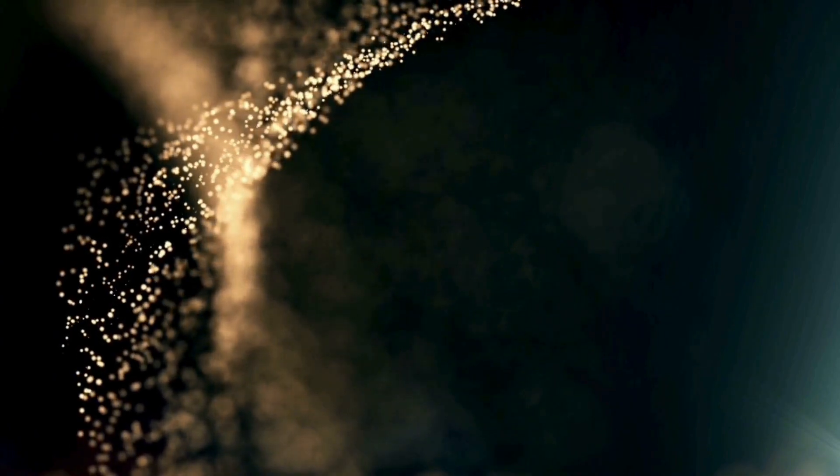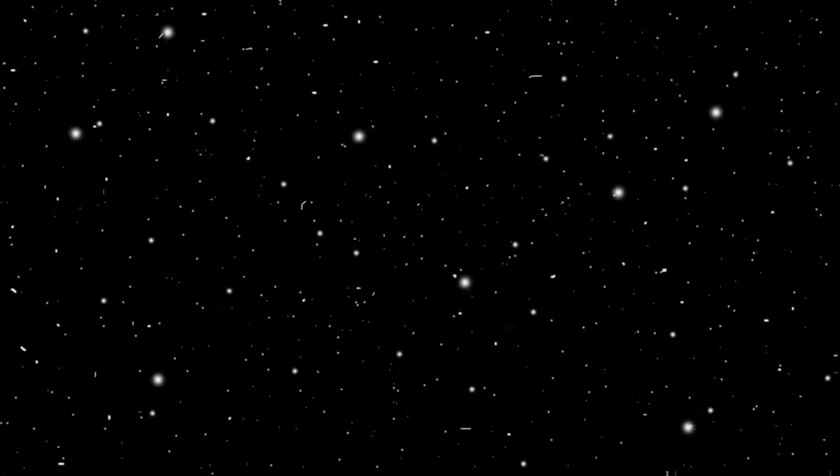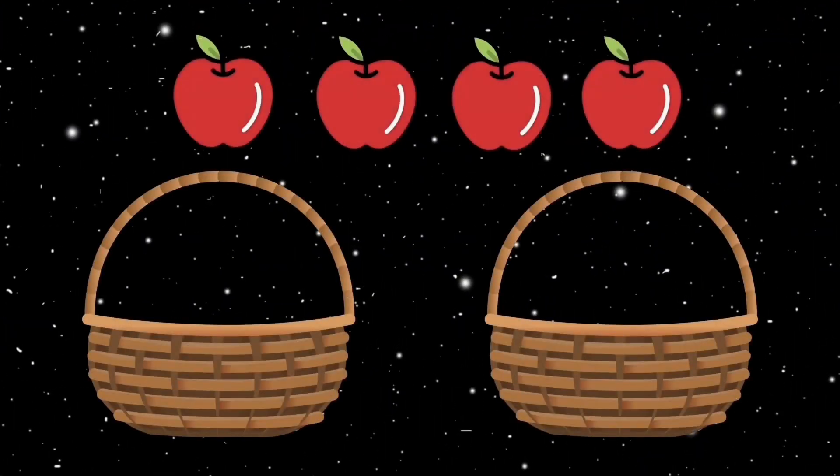To answer this question, one must introduce the notion of multiplicity. Multiplicity, in simple terms, is the number of ways you can arrange the states that you have amongst the available platforms. For example, you have two baskets, platforms, and four apples, states.